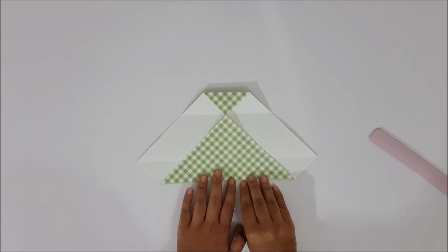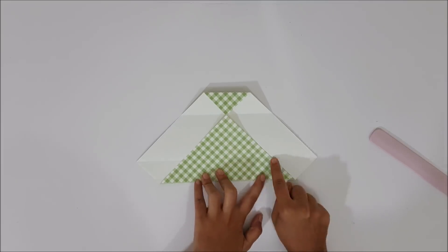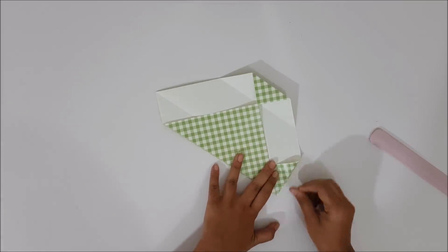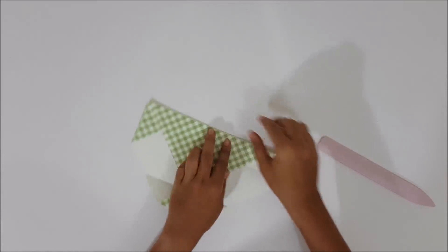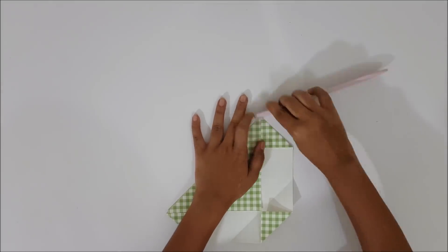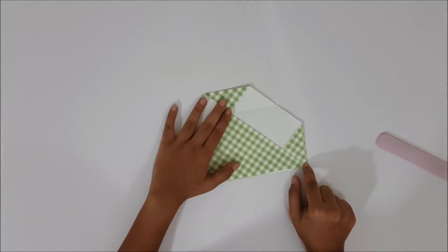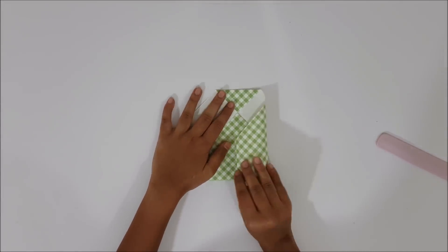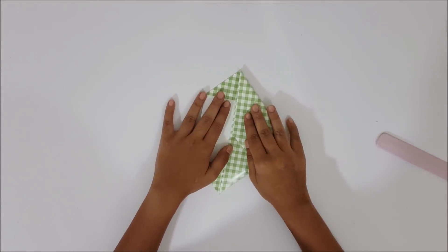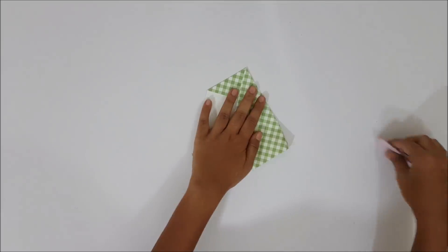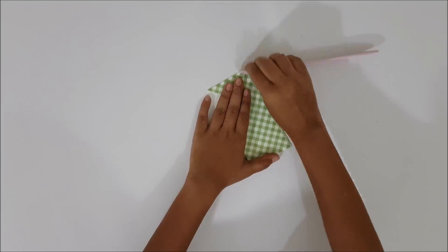As you see we have a big triangle and a small triangle. Now fold the other corner parallel to the bigger triangle and repeat the same on the last corner. Next fold the right side parallel to the smaller triangle, crease the folds, and open it.